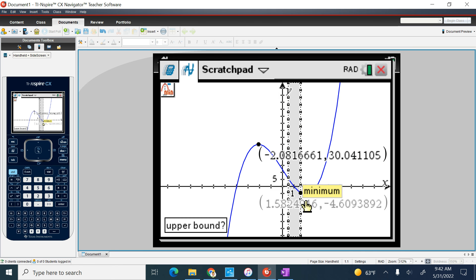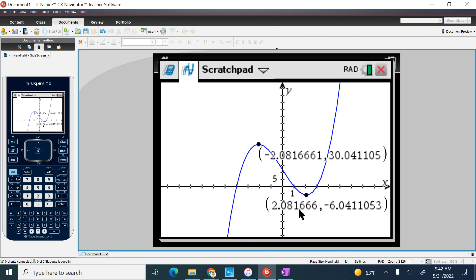And then I'm going to click, keep going, going, going until the word minimum stops. Click to the right, and there's my minimum value.